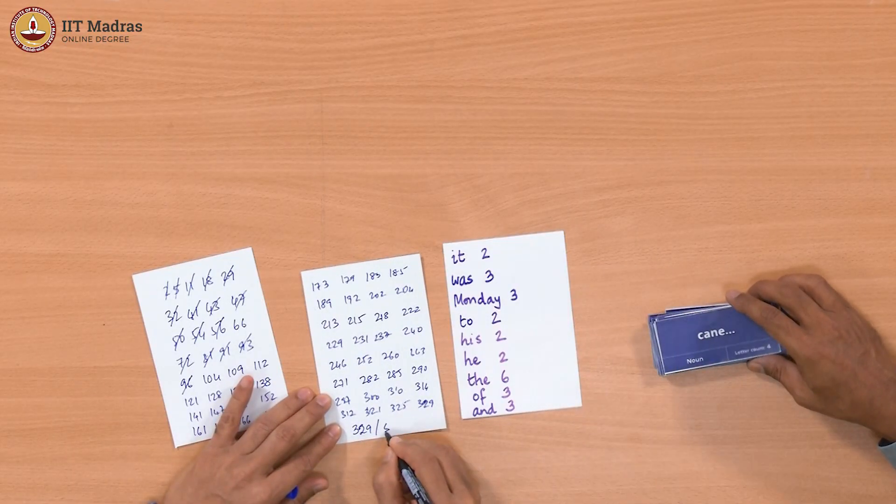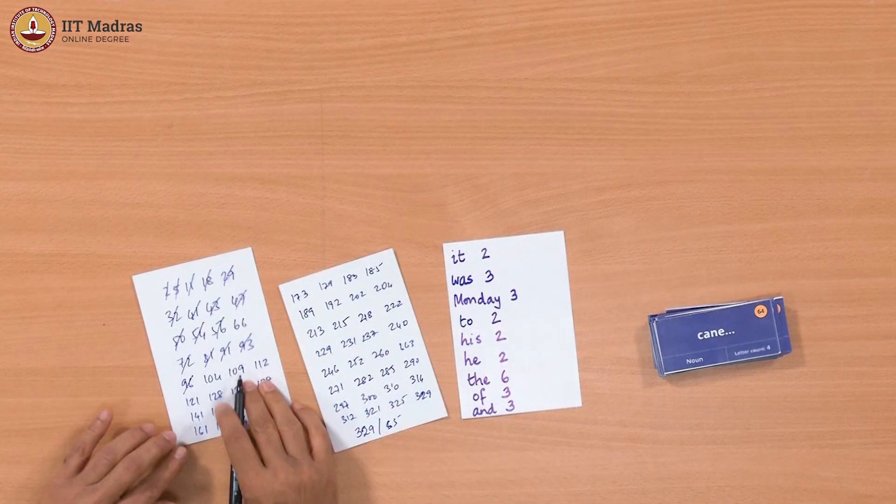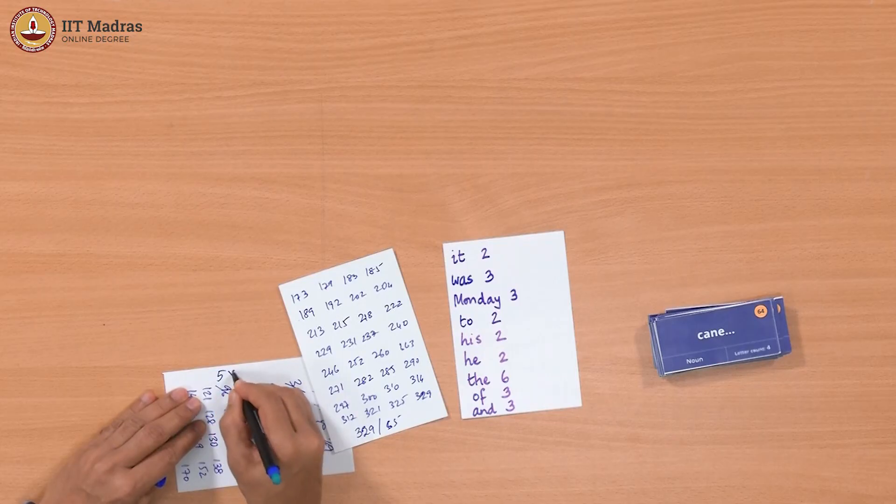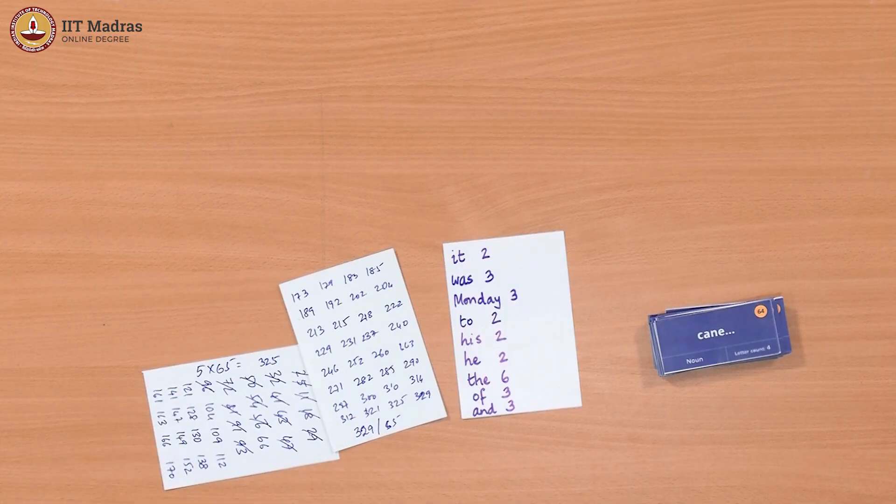So we have 329 and 65. This is roughly, if it was 5 it will be 330, so it is little under 5. Some 4 point... 5 into 65 is 325, so this is about 5.